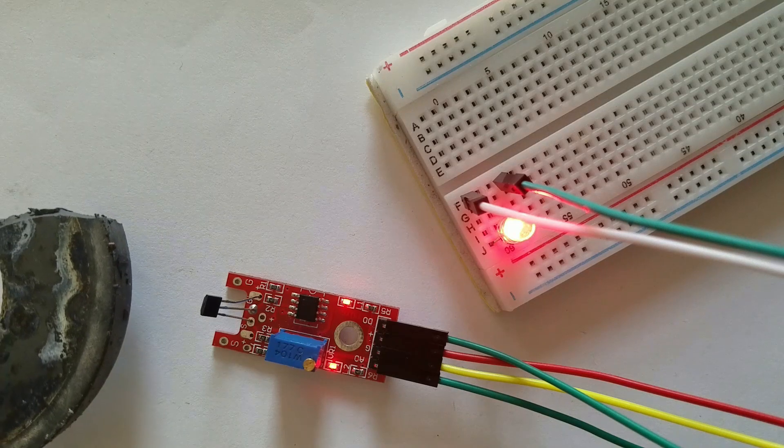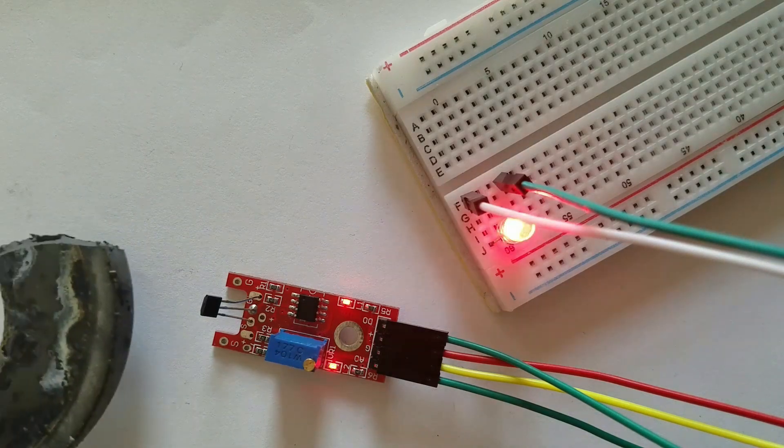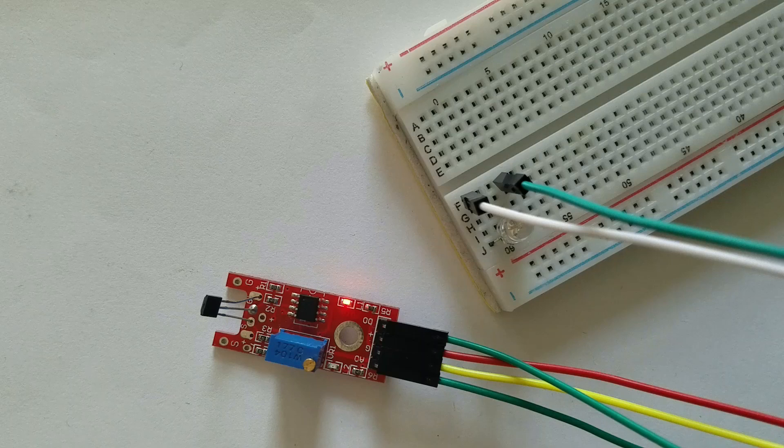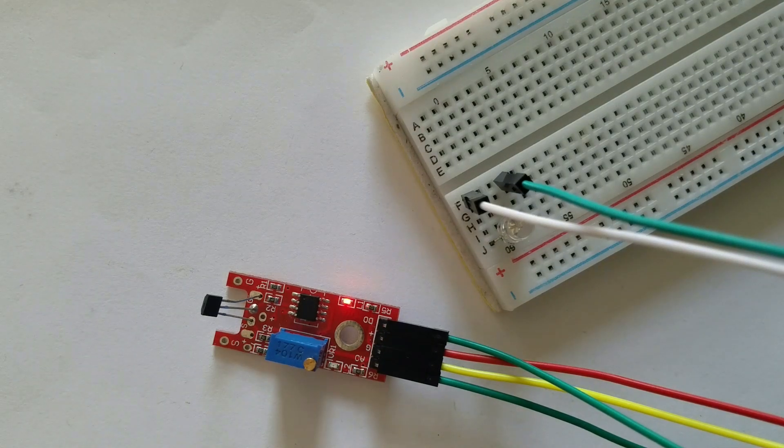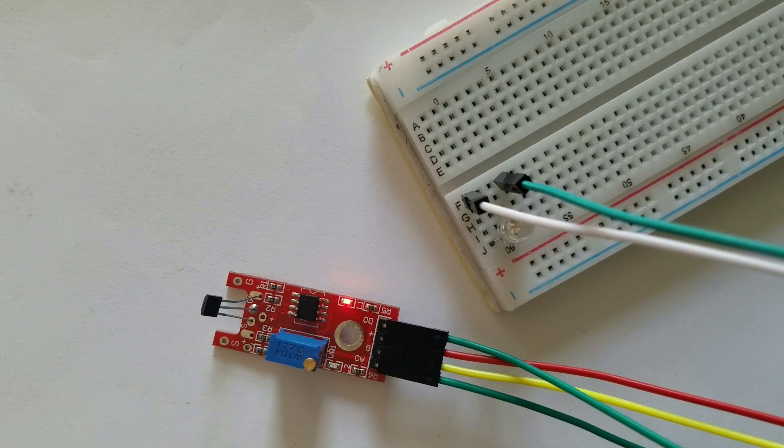The digital output acts as a switch that will turn on or off when the magnet is near. On the other hand, the analog output can measure the polarity and relative strength of the magnetic field.